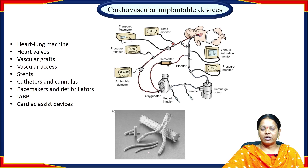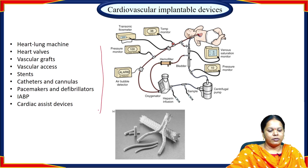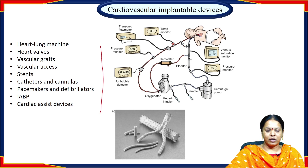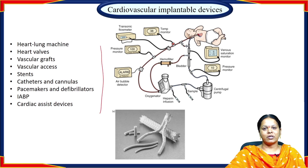Coming to the various cardiovascular implantable devices that use biomaterials, we have: heart-lung machine, artificial heart valves, vascular grafts, vascular axes, stents, catheters and cannulas, pacemakers and defibrillators, intra-aortic balloon pumps (IABP), and cardiac assist devices. All these are implantable cardiovascular medical devices used for different ailments pertaining to the heart and vascular system. For example, pacemakers and defibrillators are used when the heart pacing action is deteriorated, assisting it with an external device.